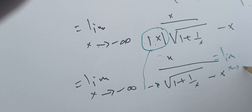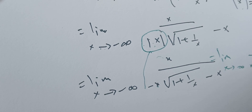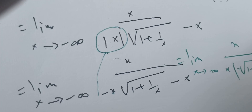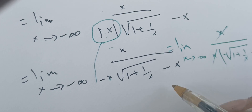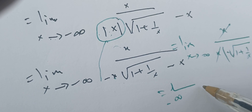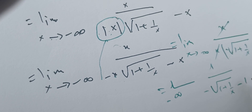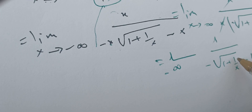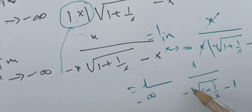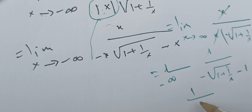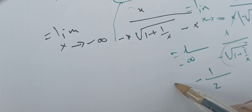Now I can factor out x, and since x is not zero — it's a large negative number — I can cancel x from numerator and denominator. I get the limit as x goes to minus infinity of one over minus square root of one plus one over x, minus one. As x goes to minus infinity, one over x goes to zero, so the square root of one plus one over x goes to one. Therefore we get one over minus one minus one, which equals one over minus two, which is minus one half.